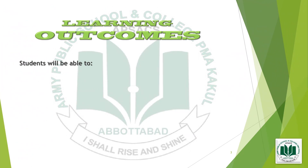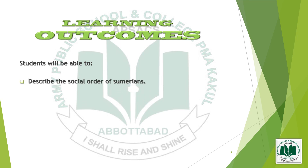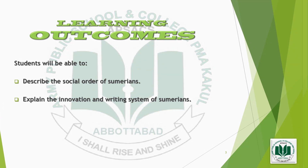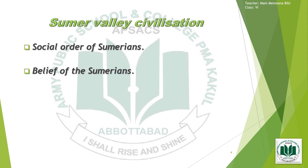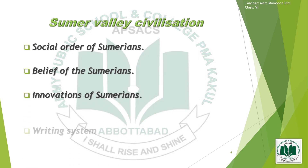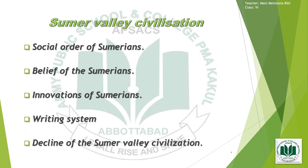Learning outcomes: students will be able to describe the social order of Sumerians and explain the innovations and writing system of Sumerians. In today's subject we will discuss the Sumer Valley Civilization, including the social order of Sumerians, beliefs of the Sumerians, innovations, the writing system, and the decline of the Sumer Valley Civilization.